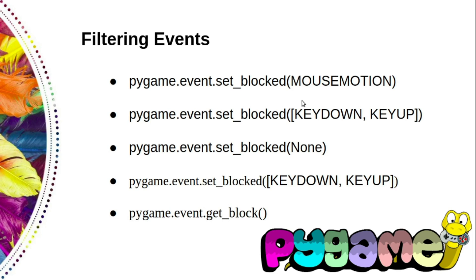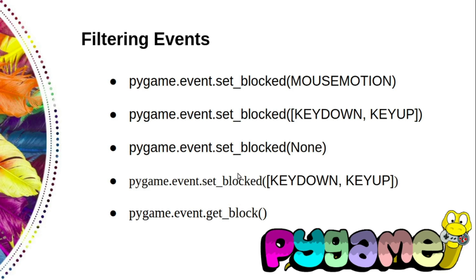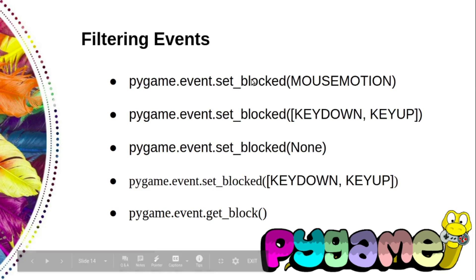You can block events from the event queue with the set_block function. Let's take a mouse motion event to understand it better. We can pass the mouse motion event as a parameter to set_block: pygame.event.set_block, passing mouse motion.